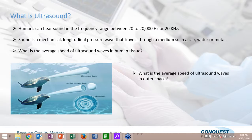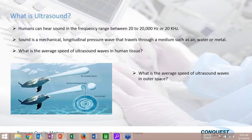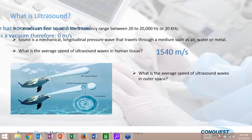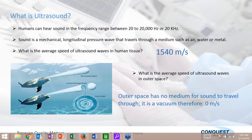The average speed of ultrasound waves in human tissue is 1,540 meters per second, and this becomes important when we look at frame rates or how fast an ultrasound system can operate. And as a trick question: what is the average speed of ultrasound waves in outer space? The answer is zero, because ultrasound cannot travel in outer space since there is no medium to travel through.